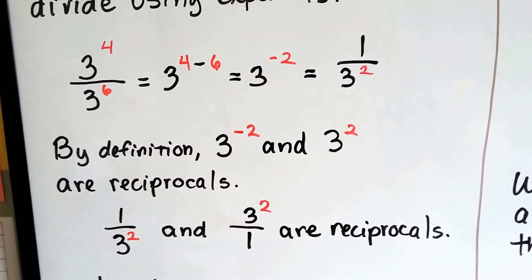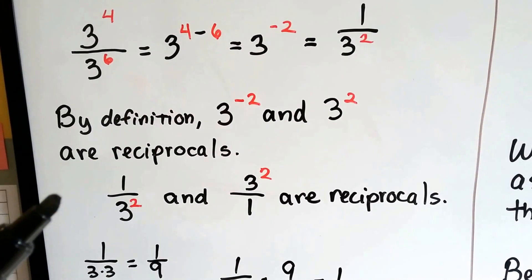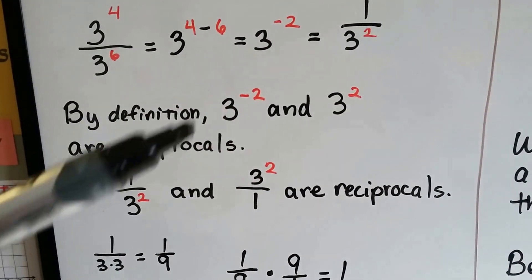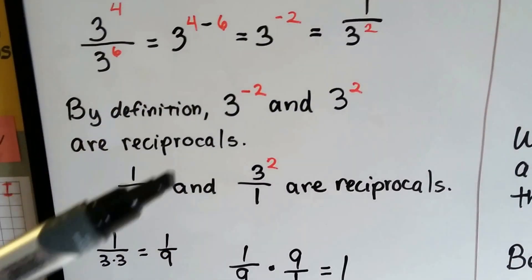Now, by definition, 3 to the negative second power and 3 to the second power are reciprocals, and here's why. If 3 to the negative second power is 1 over 3 to the second, like that,